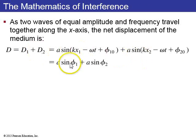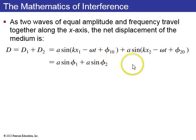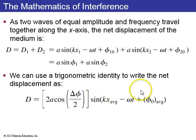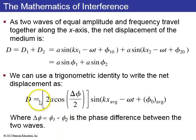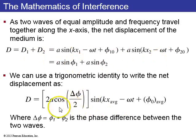In general, the math looks like this. You're adding two different phases — phi 1, which is kx1 minus omega t plus phi-1-zero, and phi 2. Using a trigonometric identity, we can write this sum as a sine wave: sine of kx-average minus omega t plus the average of the two phase constants, all times the amplitude 2a times cosine of delta phi over 2, where delta phi is the phase difference. What matters when adding these two waves is the difference between their phases, delta phi — that determines the amplitude of the final wave.